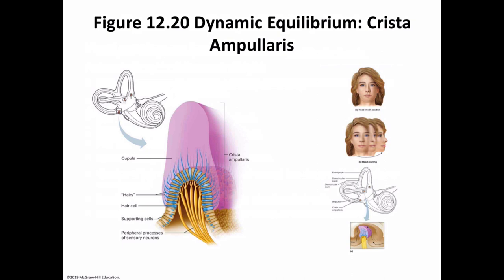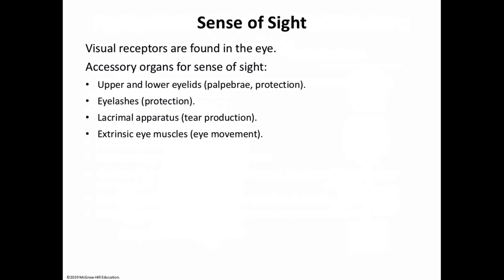From here, I'll move on to the sense of sight. Our visual receptors are found in the eye. The sense of sight has a number of accessory organs, including the upper and lower eyelids, the lacrimal apparatus, and a set of six extrinsic eye muscles that move the eyes, all of which help protect the eyes.